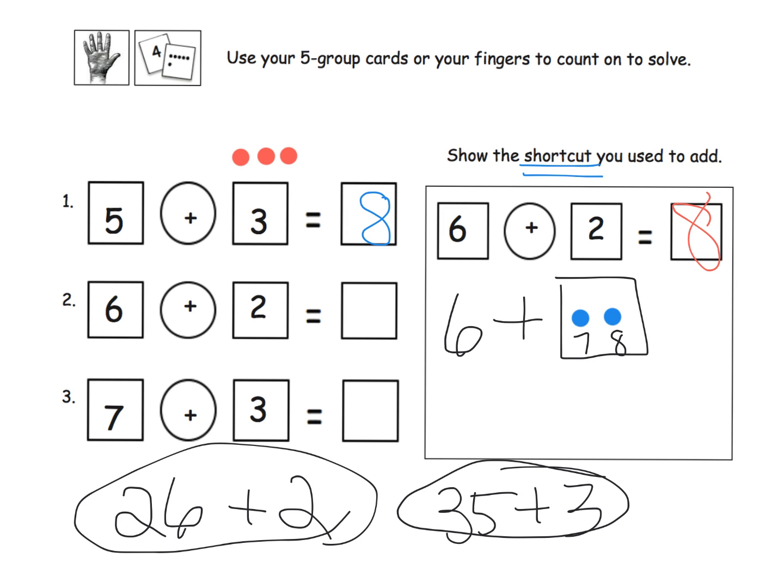For the students who are finding this easy at this point, a real quick one that I'm just thinking of is you can put a two in front of every one of these and turn it into 25, 26, and 27, and then boy, in two seconds you've just differentiated for that top end of your class.